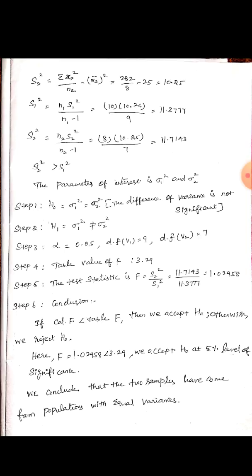Step 3: degrees of freedom at 5% level of significance. Degrees of freedom V1 equals N1 minus 1 equals 9. Degrees of freedom V2 equals N2 minus 1 equals 7. Step 4: table value of the F-test — from the table provided in the examination hall, with V1 equals 9 and V2 equals 7.